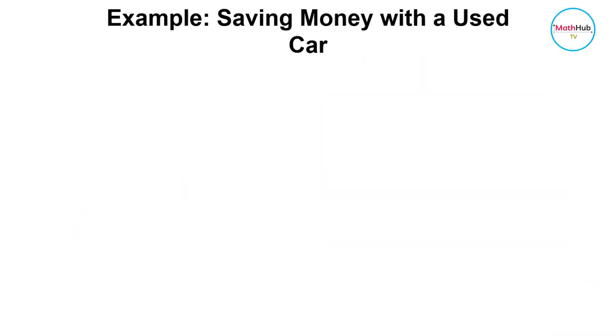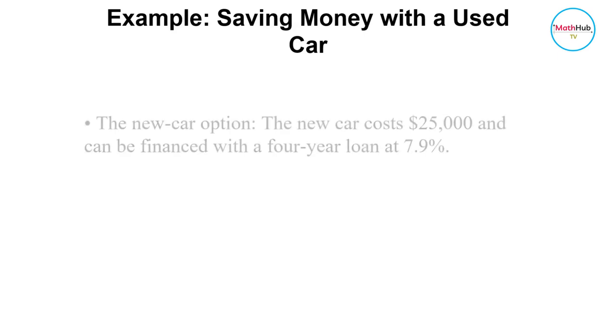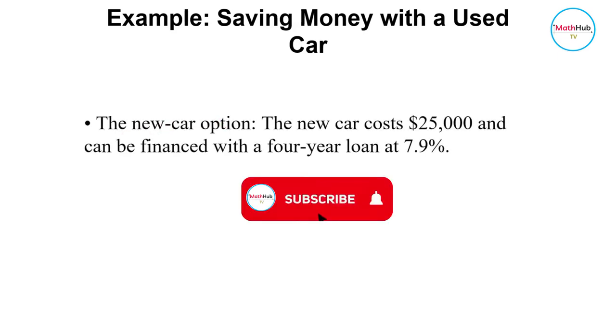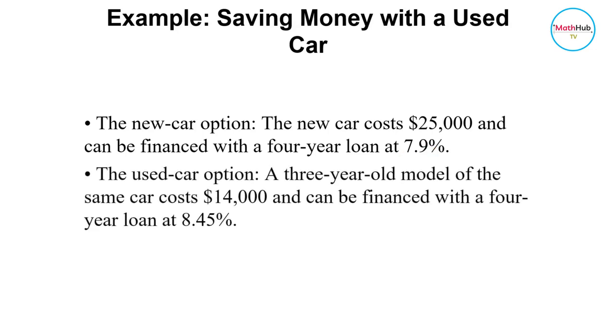Suppose you are thinking about buying a car and have narrowed down your choices to two options. The new car option: the new car costs $25,000 and can be financed with a four-year loan at 7.9%. The used car option: a three-year-old model of the same car costs $14,000 and can be financed with a four-year loan at 8.45%.